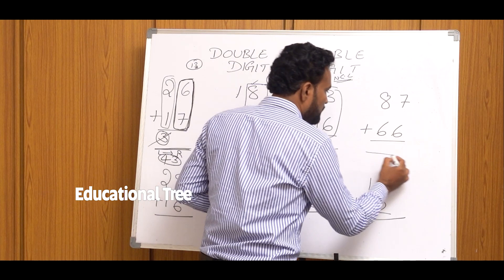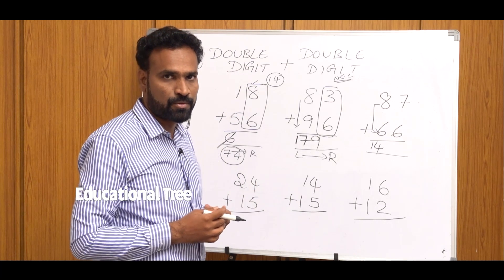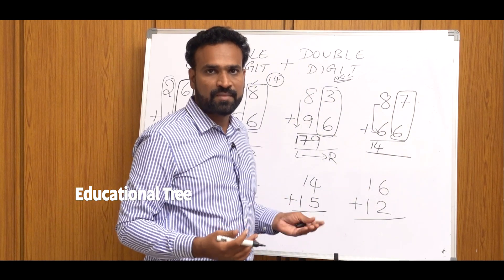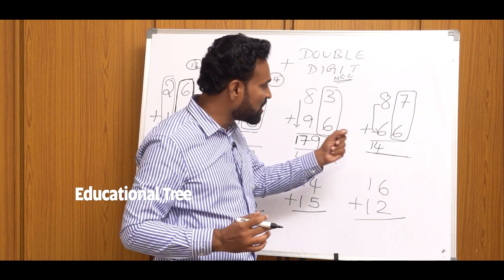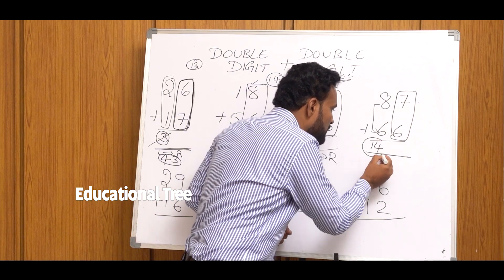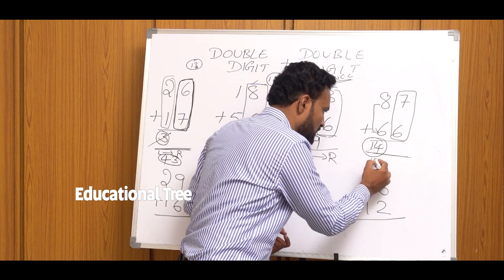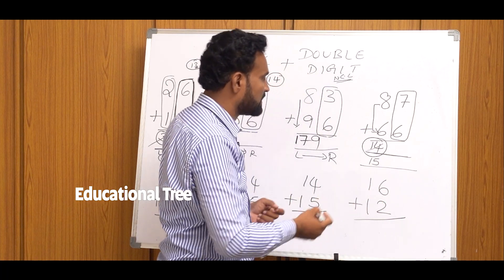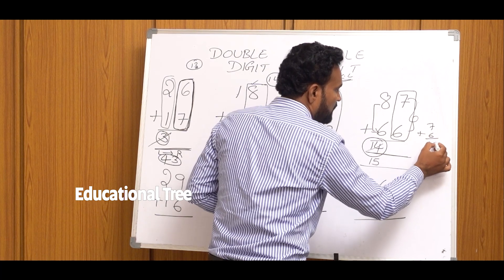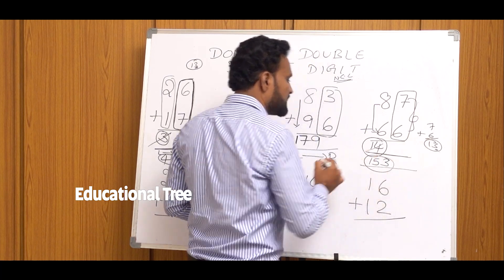Next problem, left to right. 8 plus 6 is 14. Next place: check. Sum of 7 and 6 is 13, which is greater than 10 — Carry Combination. For carry combination, we immediately add 1 more to 14, making it 15. Next, the End Number: sum of 7 and 6 is 13, so we write 3. The final answer is 153.